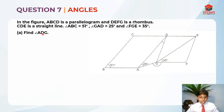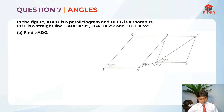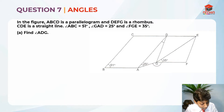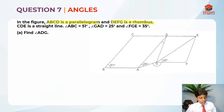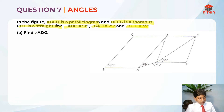Find angle ADG. So since we have read the question, we can move on to highlighting the key information. ABCD is a parallelogram. DEFG is a rhombus. And CDE is a straight line. Angle ABC is 51 degrees. Angle GAD equals 25 degrees. And angle FGE equals 35 degrees. They are telling us to find angle ADG.